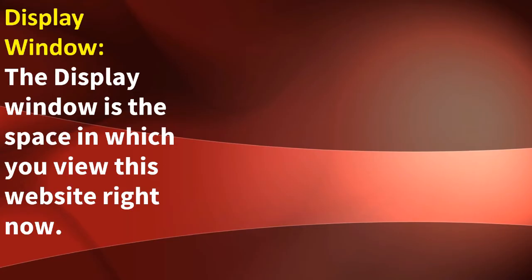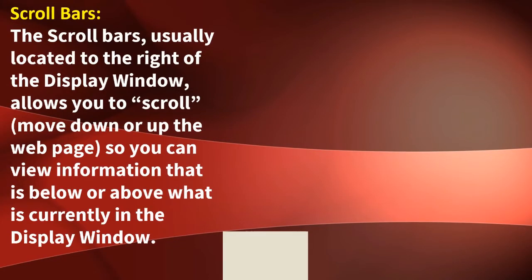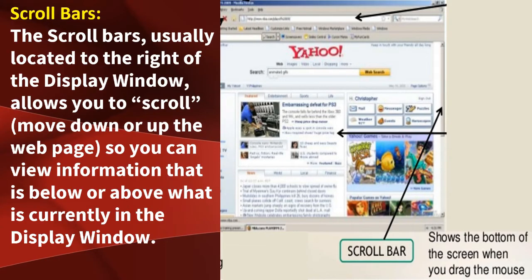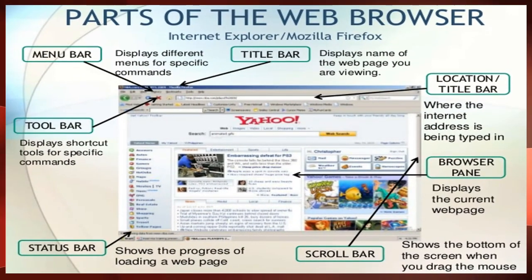Display Window. The display window is the space in which you view this website right now. Scroll Bars. The scroll bars, usually located at the right of the display window, allow you to scroll, move down, or move up the web page, so you can view information that is below or above what is currently in the display window.